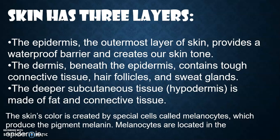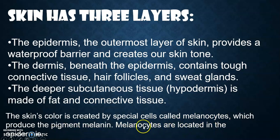Skin has three layers. First, the epidermis — the outermost layer of skin provides a waterproof barrier and creates our skin tone. Second, the dermis, beneath the epidermis, contains connective tissue, hair follicles, and sweat glands. Third, the deeper subcutaneous tissue, or hypodermis, is made of fat and connective tissue. The skin's color is created by special cells called melanocytes, which produce the pigment melanin. Melanocytes are located in the epidermis.